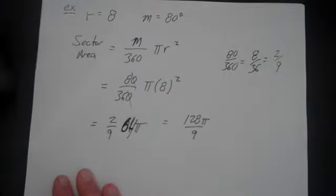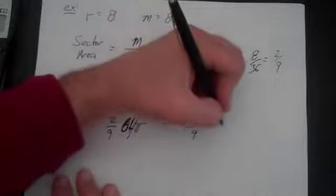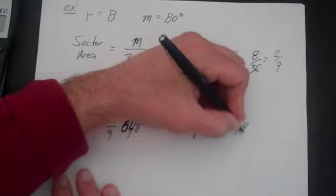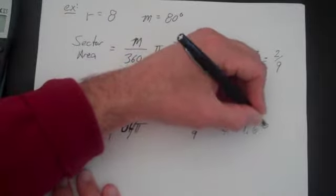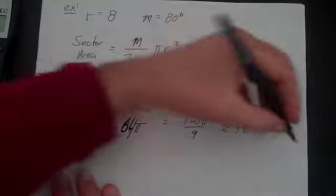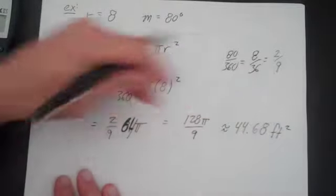And if you wanted to get an approximate answer, you could go ahead and make that into a decimal and times it by 3.14. And your approximate answer will be 44.68. And this was in feet, this would be square feet.